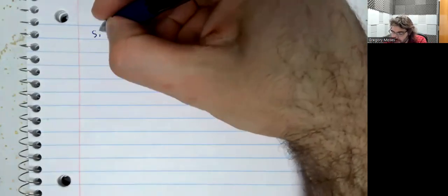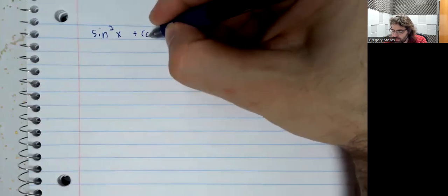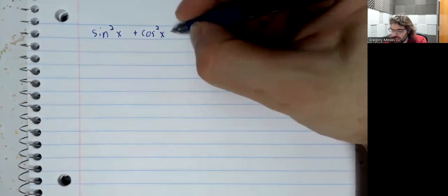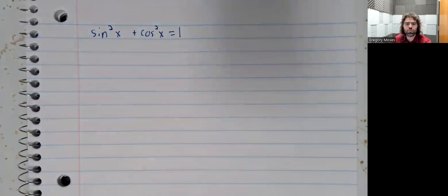This section of the textbook is called Alternate Forms of the Pythagorean Identity, and the alternate forms come from doing a division on the Pythagorean Identity. So the Pythagorean Identity, as a reminder, says that the sine squared plus the cosine squared equals one.